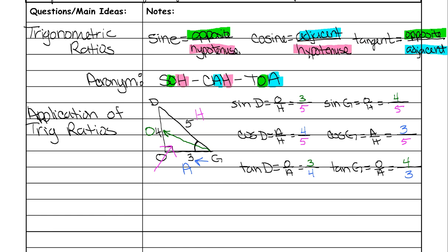You will be given one of these on your test, and it will just ask you for one random one. It will give you a triangle and ask, for example, 'What's the cosine of D?' or 'What's the sine of G?' So you have to know how to set them up. You won't ever be asked to fill in all six.